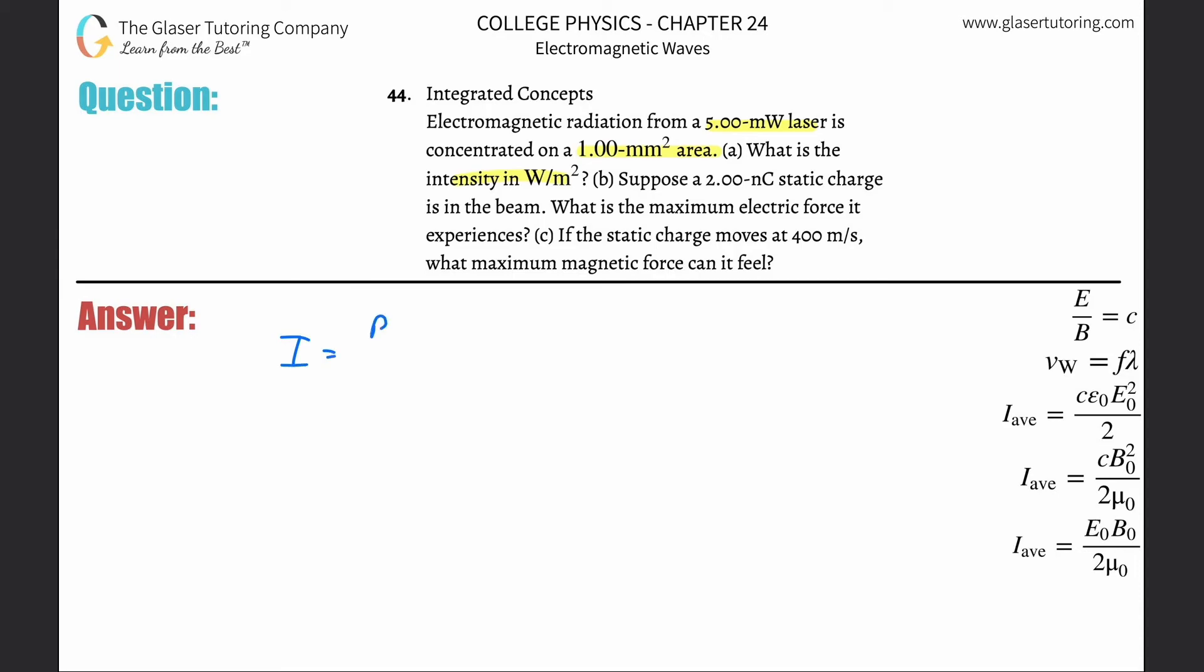Intensity is simply going to be power over area. The power they gave you in milliwatts, but we need that in watts, so simply take that and multiply it by 10 to the minus 3, divide them by the area.